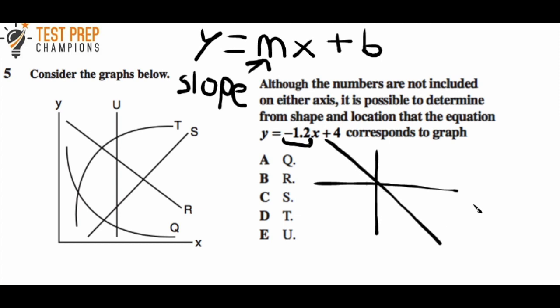Just by knowing that, we look at these lines on the graph and focus on R. See how it starts high and goes low? This is a negative slope. R is the right answer.